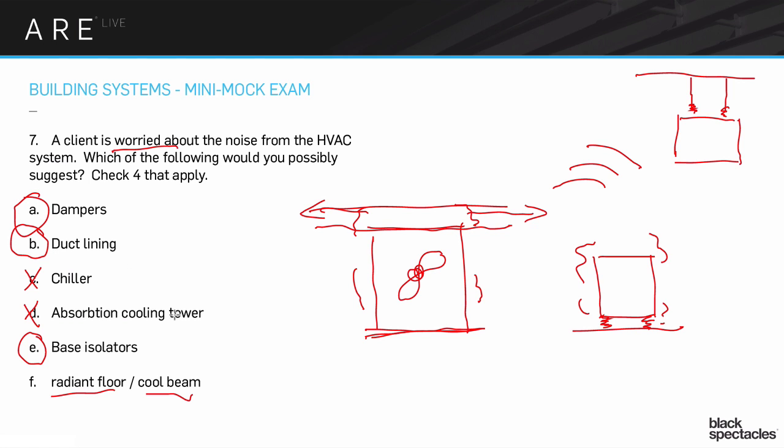I actually think dampers is kind of the least possible answer, but the dampers would allow you to, if there's a noise problem, to be able to slow down the air and create zones that didn't get as much air. So you would be able to separate out the places that got a lot of air and the places that only got a little bit of air, and those would be quiet.